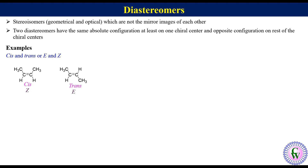Here we can see that these two are stereoisomers and not mirror images of each other, so they are diastereomers. Now let's look at examples of diastereomers in optical isomers with more than one chiral center.